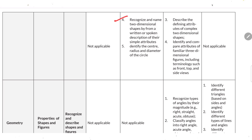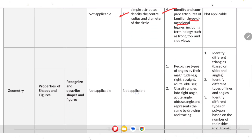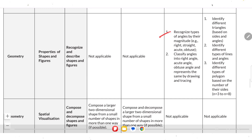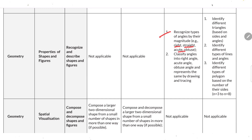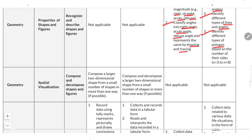Recognize and name two-dimensional shapes from written or spoken descriptions. Identify the center, radius and diameter of a circle. Describe defining attributes of complex 2D shapes. Identify and compare attributes of familiar three-dimensional figures. Recognize types of angles: right, straight, acute and obtuse. Classify angles and represent them by drawing and tracing. Identify different triangles based on sides and angles. Identify different types of lines, angles and polygons based on number of sides.